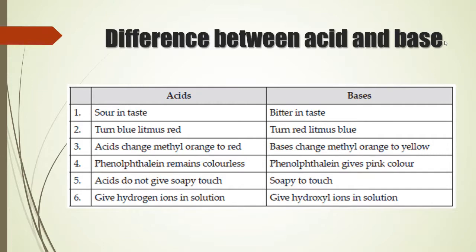The difference between acid and base: Acids are sour in taste whereas bases are bitter in taste. Acid turns blue litmus red, and base turns red litmus blue. Acid changes methyl orange to red, whereas bases change methyl orange to yellow. Phenolphthalein remains colorless in acid and gives pink color in base. Acids do not have soapy touch, whereas bases have soapy touch. Acids give hydrogen ions in solution, and bases give hydroxyl ions in solution. You have to write this difference in your notebook.